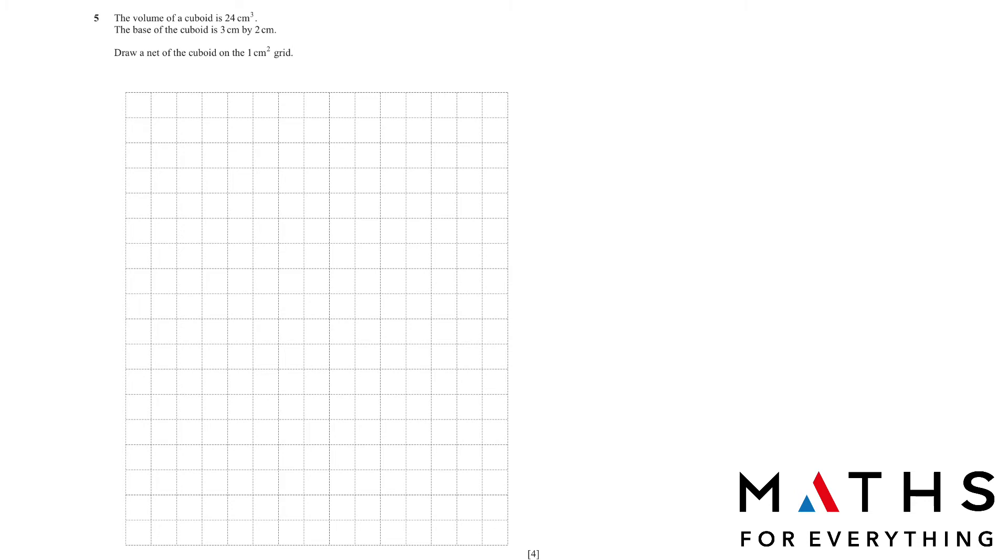Moving on to question number 5. The volume of a cuboid is 24 cubic centimeter. And the base of the cuboid is 3 centimeter by 2 centimeter. To find the volume, we need length times base times height. So the height has not been given to us. We need to find the height. Replace your length and base. That will give us 6. Shift it to the other side. It will be a divide. Our height is going to be 4 centimeter. Now we have got our length, width, and height.